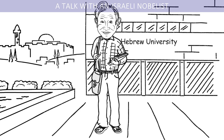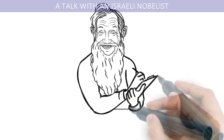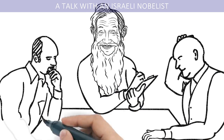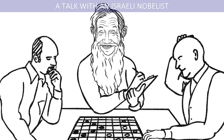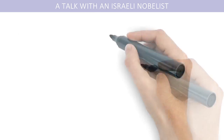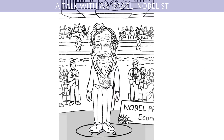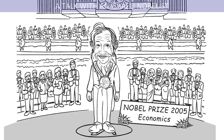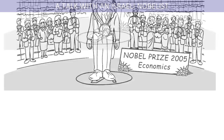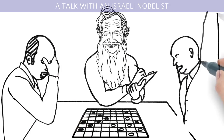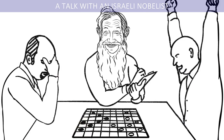His greatest contribution was in the realm of repeated games. He also won the 2005 Nobel Prize in Economic Sciences for being the first to define the concept of correlated equilibrium in game theory. What is game theory, you ask? Well, let's hear it from Professor Aumann himself.